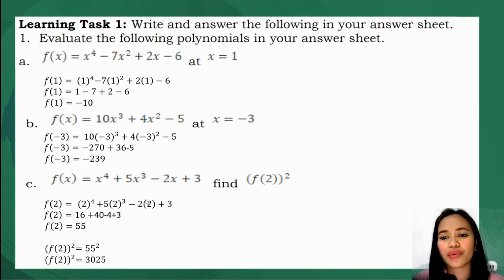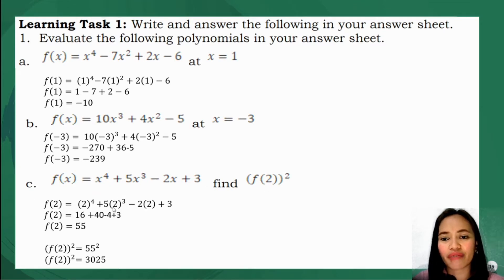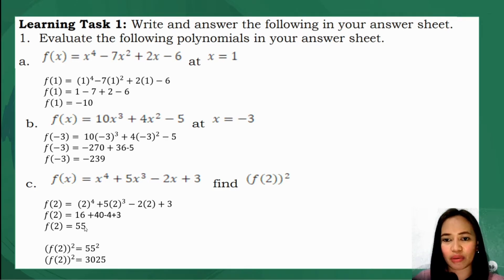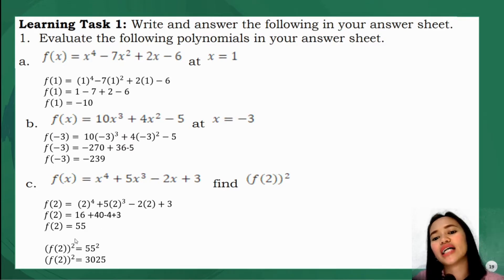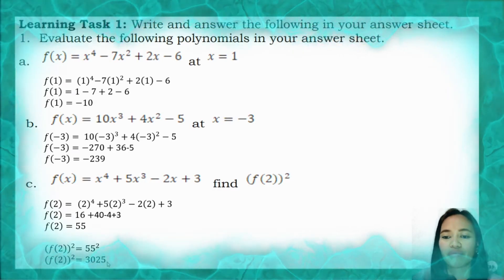For letter c, we have f(2) squared. First we need to get f(2), then square it. f(2) equals 2 to the fourth plus 5 times 2 cubed minus 2 times 2 plus 3, which gives 16 plus 40 minus 4 plus 3, so f(2) equals 55. Then 55 squared is 3025, and that is the final answer.